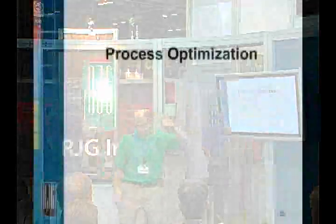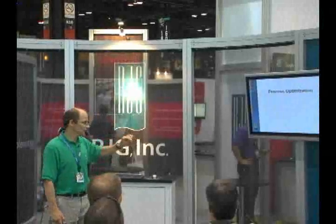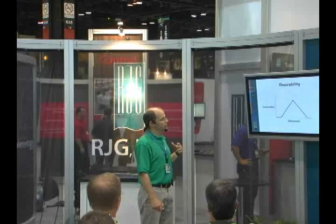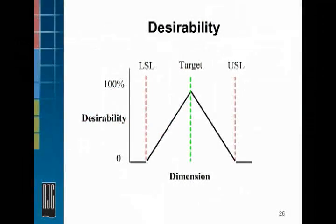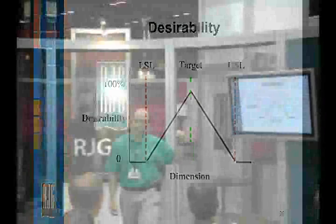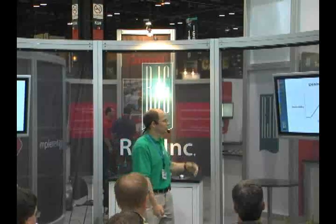Let's talk about how we can optimize our processes with the same result, same information. We're going to use something called the desirability function. This is an overview, but this is one of the things that most DOE software packages do well: taking and helping us to center a process, in this case based on a dimension.